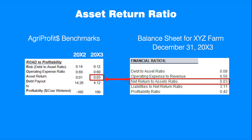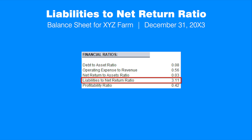The net return to assets ratio is an indicator of economic efficiency using the farm's assets. It is calculated as the ratio of the farm's net income to the value of total assets. A producer wants this ratio to be positive and as large as possible. In our example, the ratio is 0.03, meaning the farm earns three cents of net income for each dollar of assets. This value is close to the corresponding AgriProfits benchmark, indicating a relatively good efficiency position. The calculated liabilities to net return ratio is 3.11, meaning it would take about three years to repay the farm's debts if all net income goes to debt reduction.